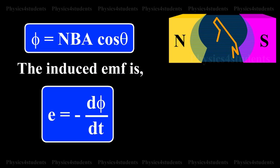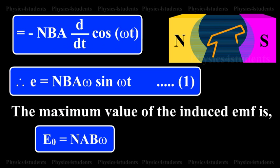The induced EMF is E = -dφ/dt = -NBA d/dt(cos ωt). Therefore, E = NBAω sin ωt. This is equation 1.